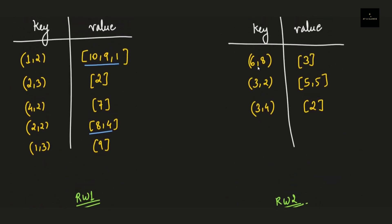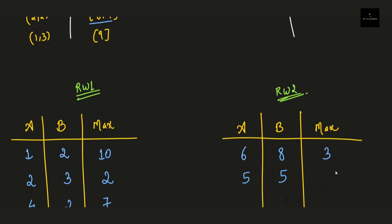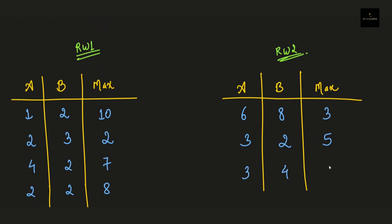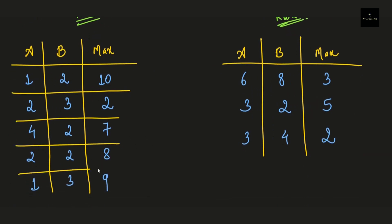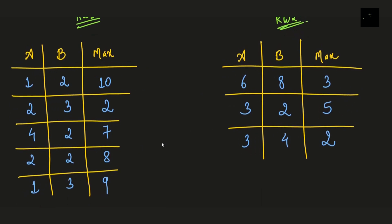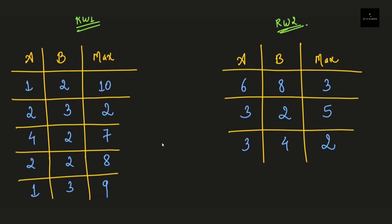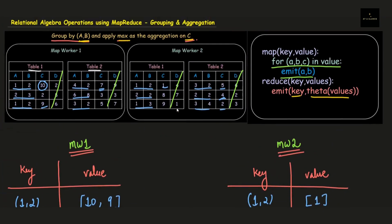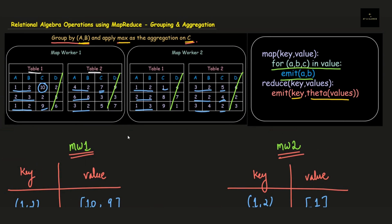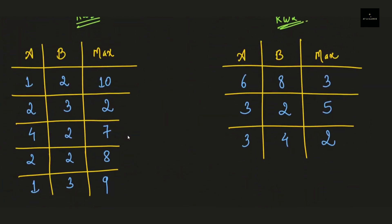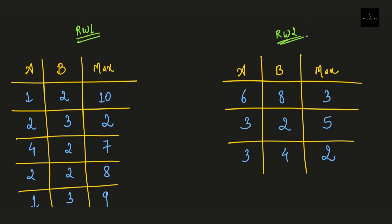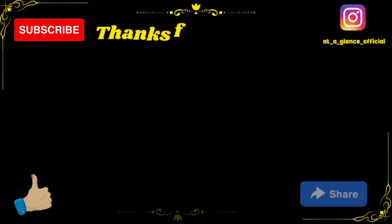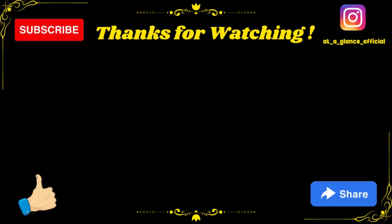We are done with both reducer workers and this is the final result. If you go by the manual method you will get the same answer after applying the grouping and aggregation operation. Similarly, you can perform other operations such as finding the minimum, count, sum, or average of all elements in a particular attribute. I hope this example and the algorithm are clear. If you have any doubts, please post them in the comment section. For more such videos, do like, share, and subscribe to my channel, hit the bell icon, and follow me on Instagram. Thank you so much for watching and have a good day.